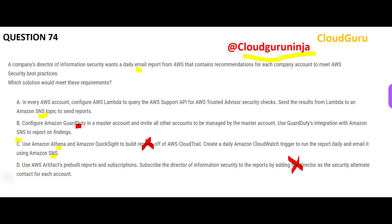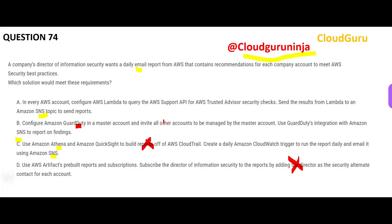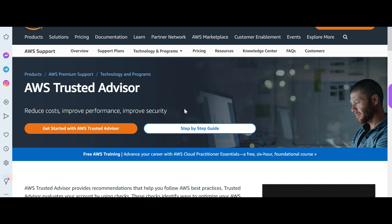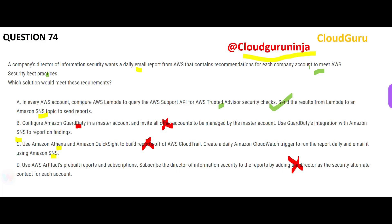Option B is talking about GuardDuty, which is like your intelligent threat detection security guard. For example, just by looking at a person, it can determine whether someone is behaving suspiciously. But this is not the best option here, because what we are really trying to do is improve our security posture — meaning it should tell us which best practices still need to be maintained.